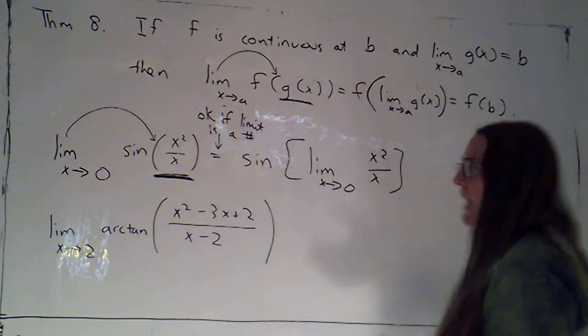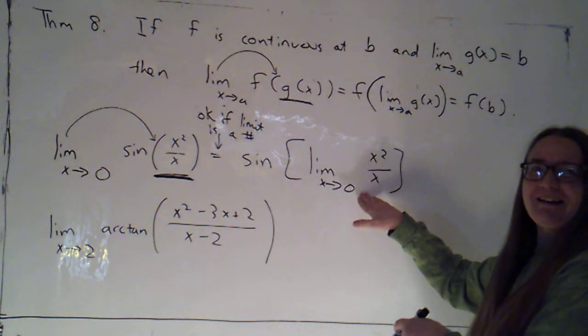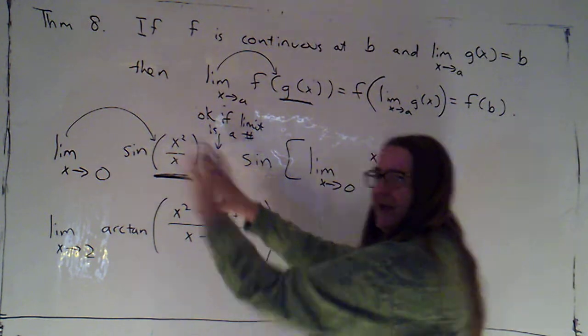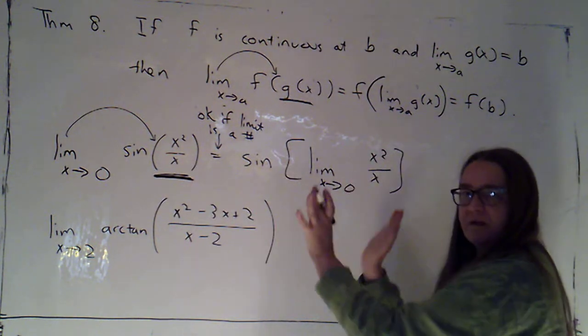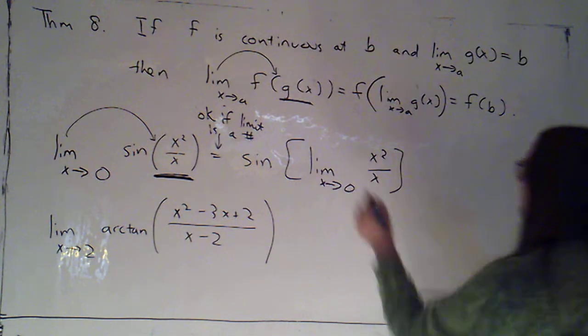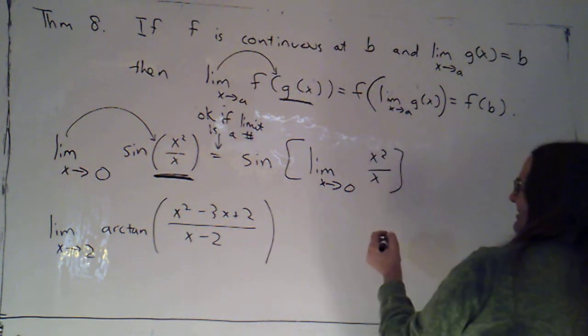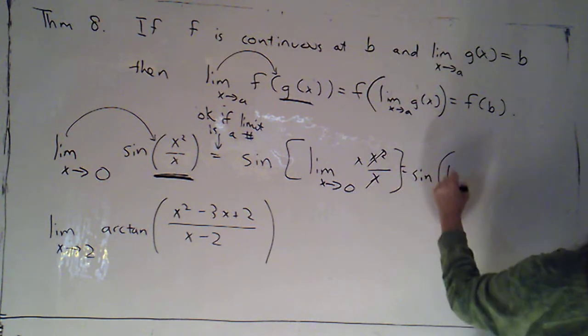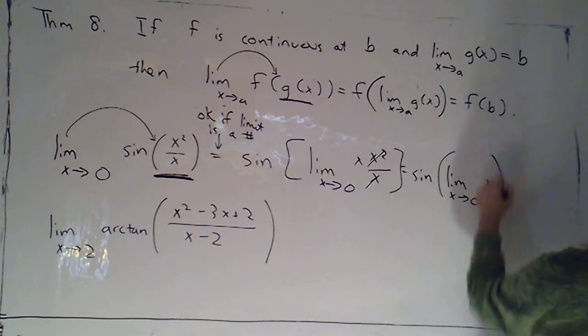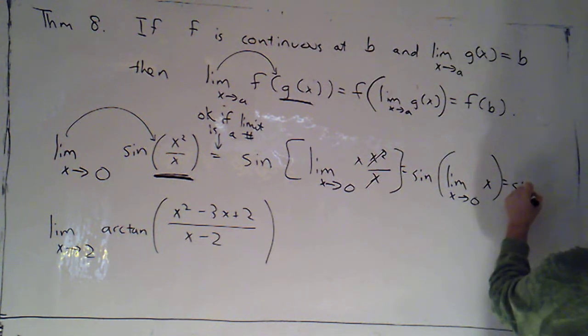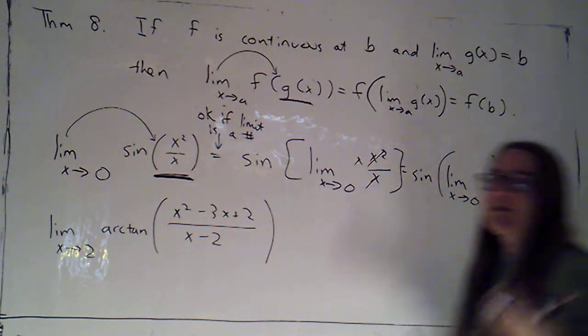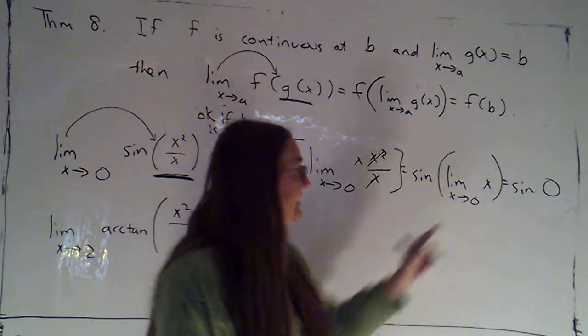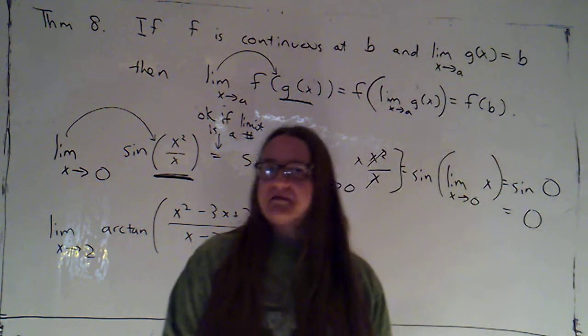Because writing something like sine of infinity or sine of does not exist doesn't make any sense. But very often, I don't know what the limit is until I pull it inside and evaluate it. So if it ends up not being a number, I know to come back to this step and erase my work or cross it off because it doesn't make sense. But let's see. If I want to evaluate this, I can just cancel a factor of x. So this becomes sine of the limit as x goes to zero of x, which is just sine of zero. Zero is a number. Now that I've evaluated the limit of that inside part, I know for sure this was legal.